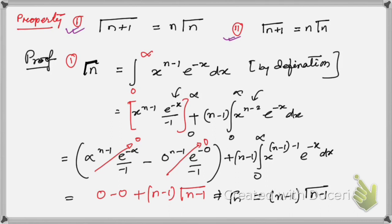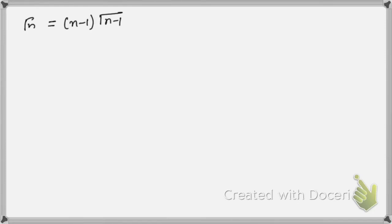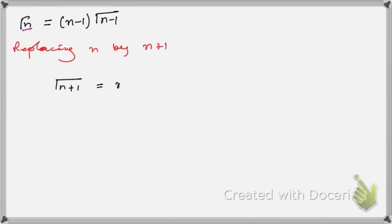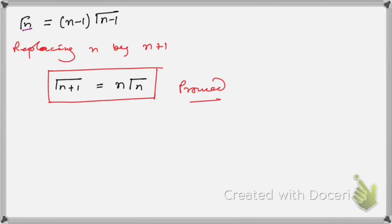Now, replacing n by n+1 in this result: Γ(n+1) — here (n+1)−1 = n — so we get Γ(n+1) = n·Γ(n). This is what we get, and the first property is now proved.